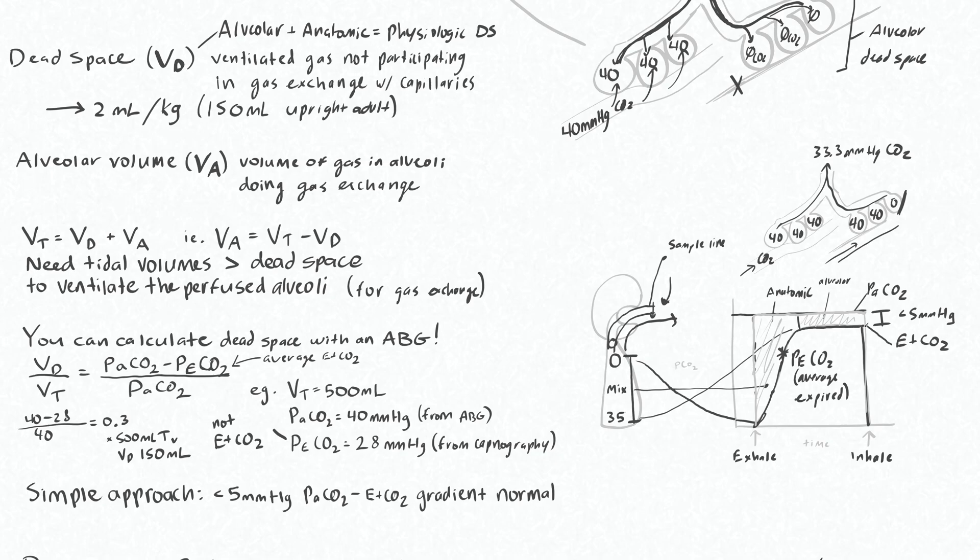Remember, this last part of your capnography is more reflective of your alveolar dead space, which is honestly what we're concerned about anyways, because the anatomic dead space should be relatively fixed. It's increases or decreases of this alveolar dead space that we're really interested in. So when this is less than five, that's good. If it's more than five, that means you have increased alveolar dead space, so get a blood gas and compare your PaCO2 to your end-tidal CO2.